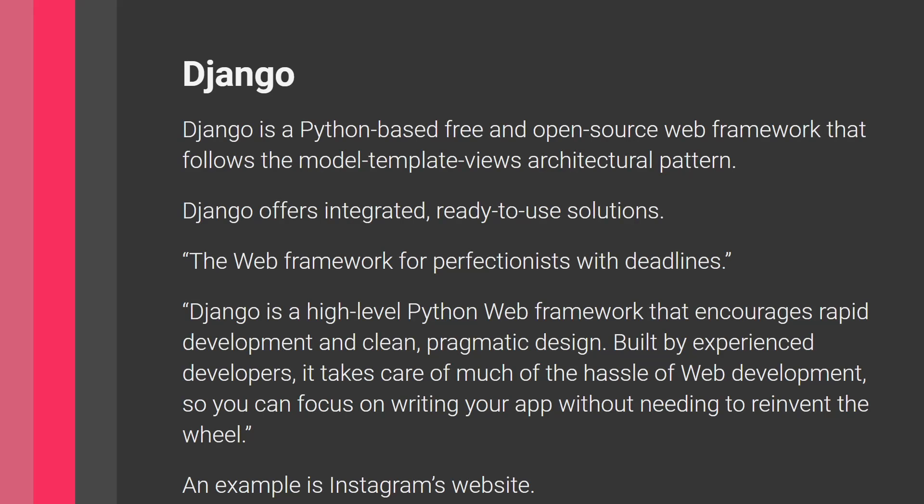Django is a Python-based, free and open source web framework. It follows the Model-Template-Views architectural pattern. The Django developers' marketing quote is that Django is 'the web framework for perfectionists with deadlines,' implying it enables rapid development — letting you build really good websites quite fast — by providing integrated, ready-to-use solutions with many built-in features and already-existing components required for web development.